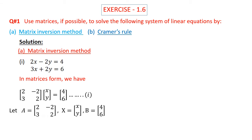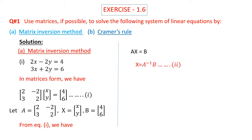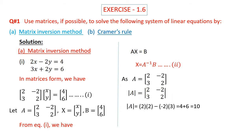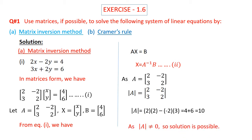We let A equal to matrix of coefficients, X equal to matrix of variables, and B equal to matrix of constants. From equation one we have AX equals B. Because A is on the left-hand side of X, we will write A inverse on the left-hand side of B. Now we will find A inverse. As A equals the matrix of coefficients, its determinant — by multiplying diagonal entries and subtracting — we have 4 plus 6 equal to 10. As the determinant is not equal to 0, solution is possible.